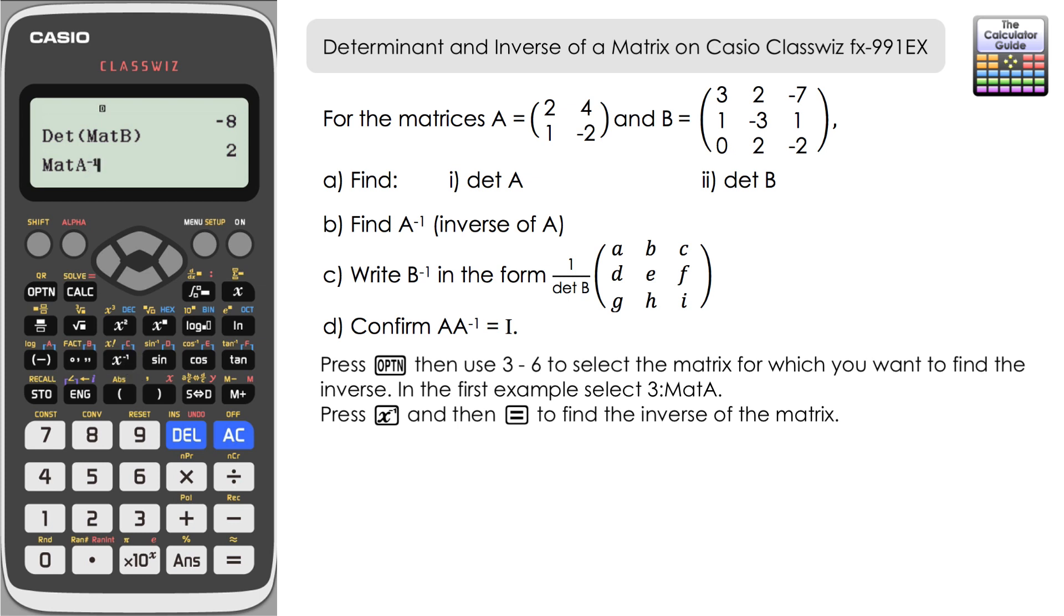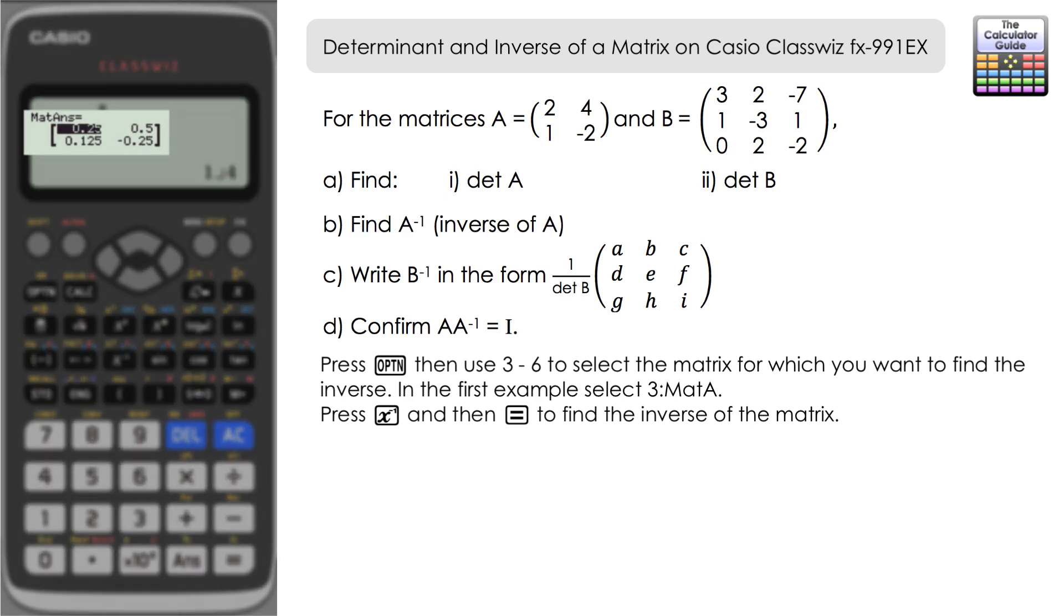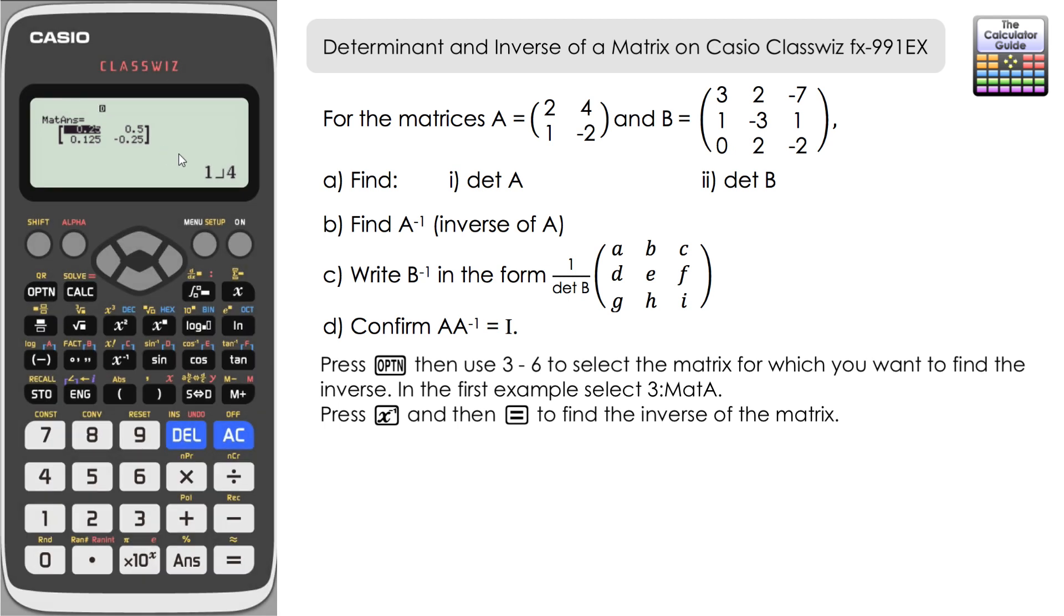If you press equals then we have the inverse of this matrix. Now just take a moment to have a look at how it's displayed. In the actual matrix we have the values in decimal form as you can see here, but if you use the navigation buttons in the bottom right hand corner it gives you the fraction equivalent of those. If you're going to write this down I would suggest using the fraction form of the values here.